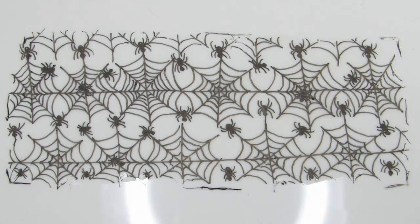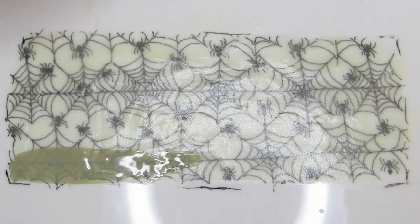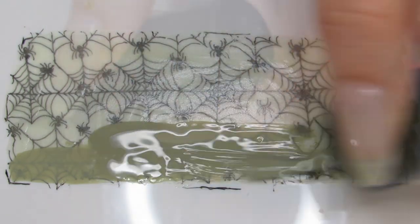Once that's done, paint a layer of your glow-in-the-dark polish on top of your design. When it's dry, paint a layer of your base color. Wait until it's completely dry.